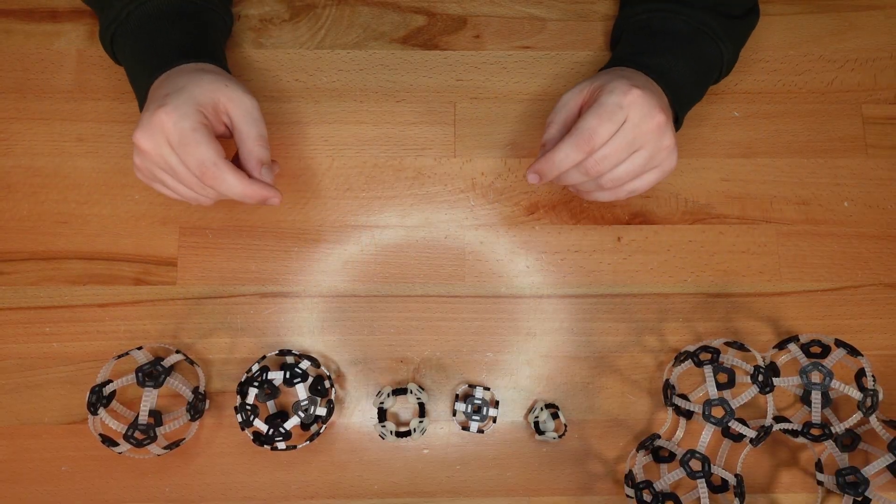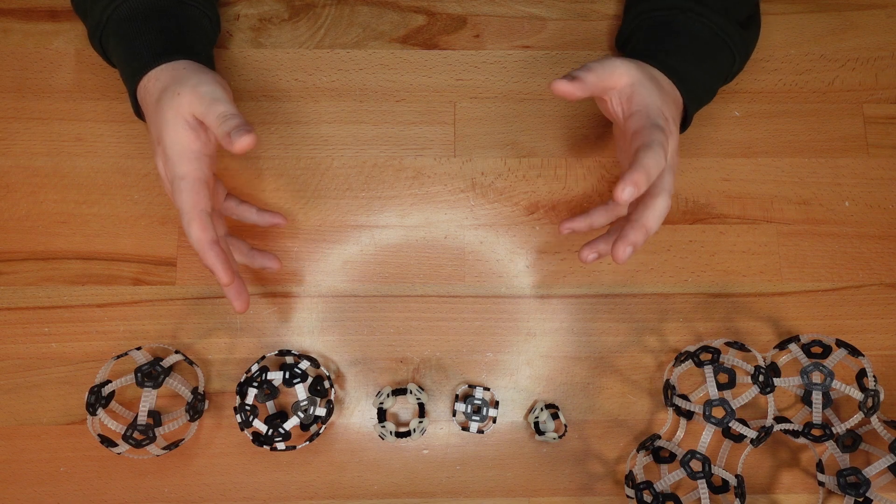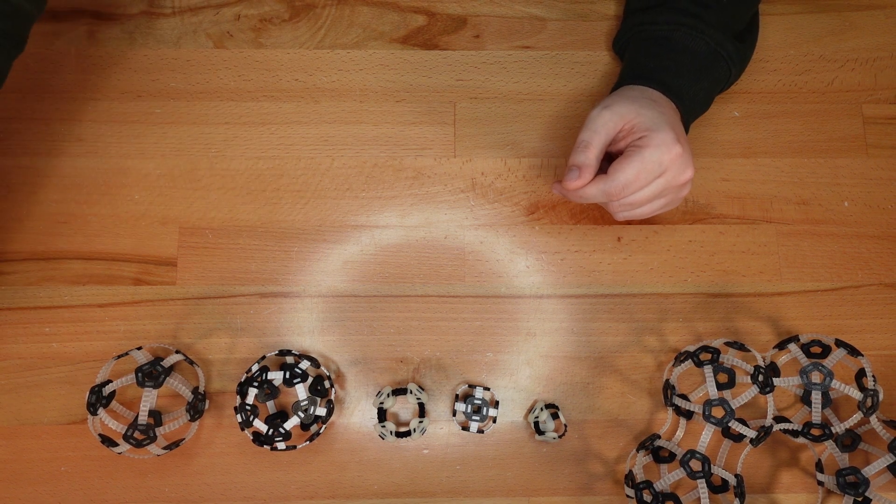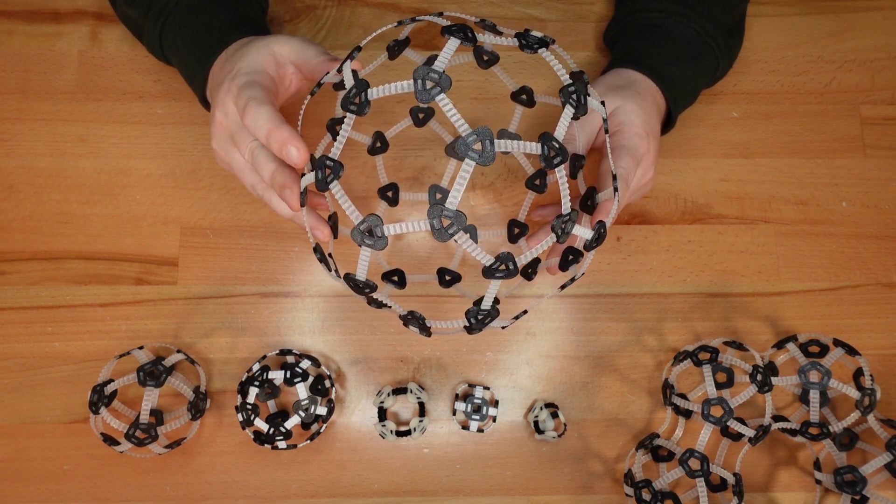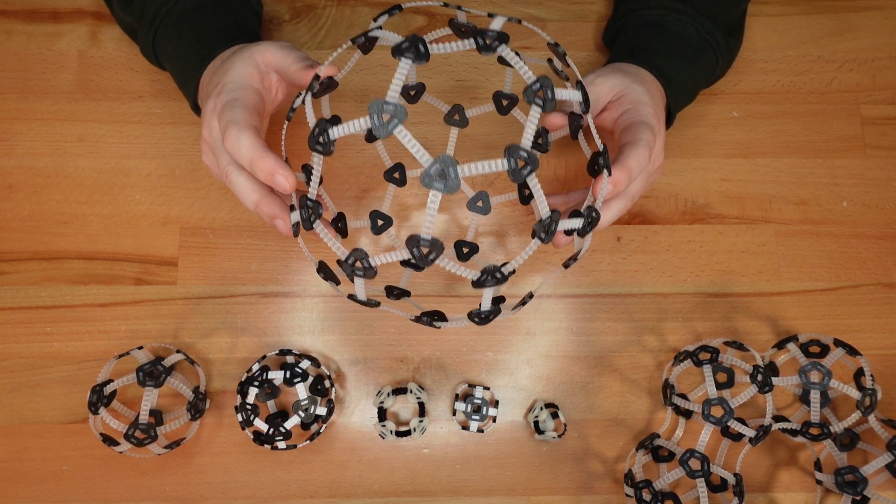But if you mix and match the node shapes, you can construct even more creative wireframes. Like this football, or as we call it in the United States, a truncated icosahedron.